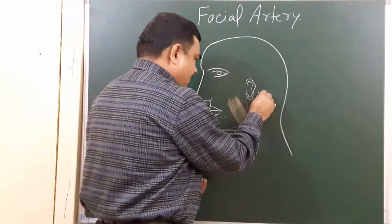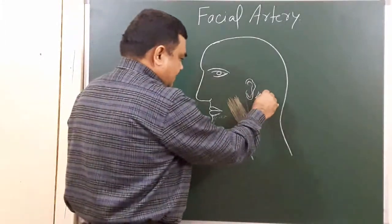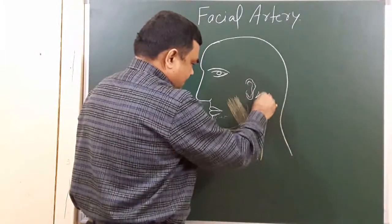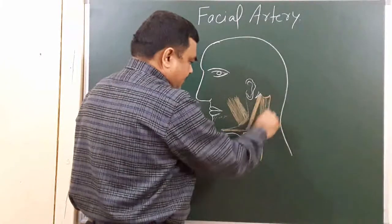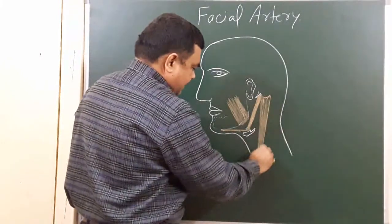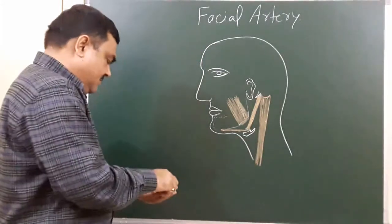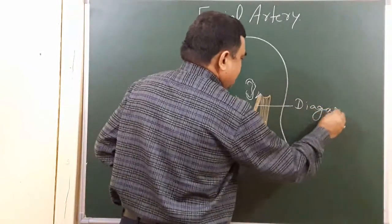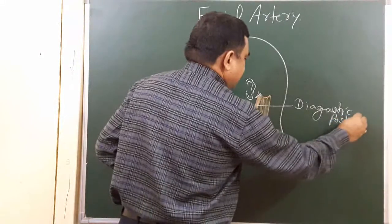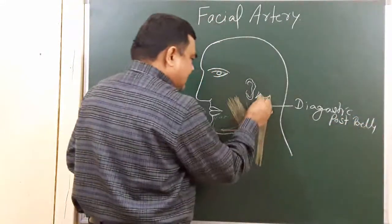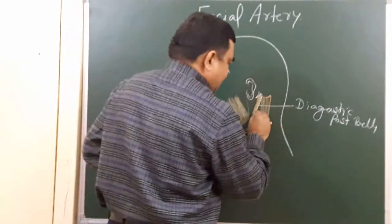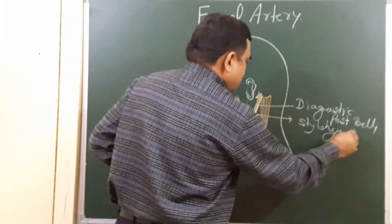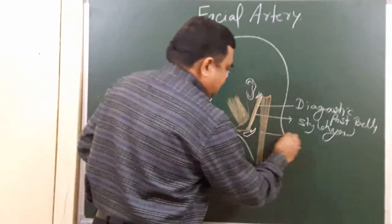Here is the mastoid muscle. From the mastoid process, another muscle is attached — this is the sternocleidomastoid muscle. This muscle is the digastric posterior belly, and another structure here is the stylohyoid. This is the sternocleidomastoid muscle.